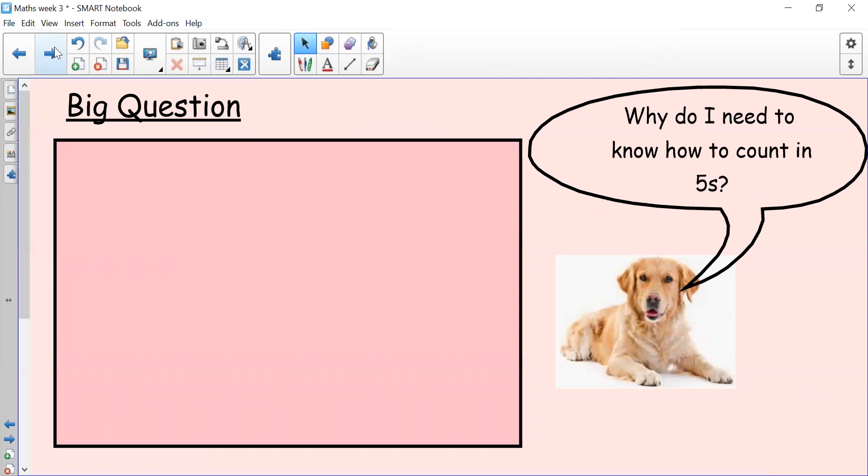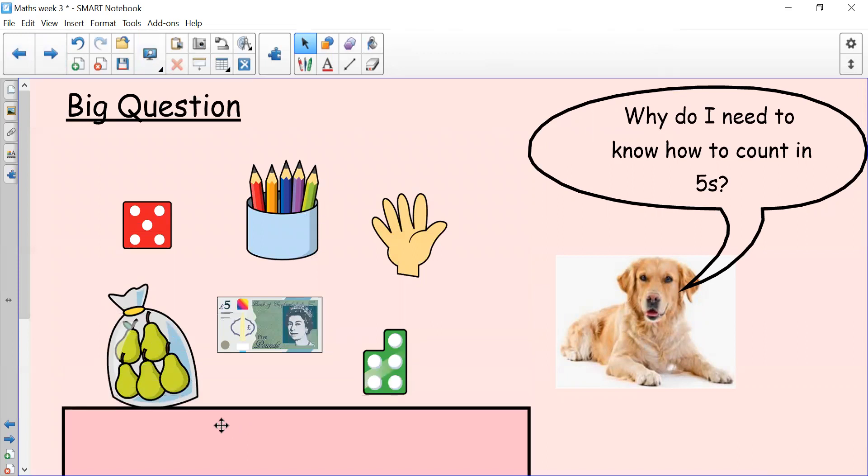Okay, so Stevie's big question today is, why do I need to know how to count in fives? Can you pause the screen and have a little think? So, similar to when we count in twos, we often find things that come in groups of five. So we have some examples here: five on a dice, five coloring pencils, five fingers and thumbs on your hand, five pound note, five pairs in a bag, and a numicon five. So those are some examples of things that can come in fives. And just like when we count in twos, counting in fives is a lot quicker. So if we can group objects into fives, it will help us to count quicker.